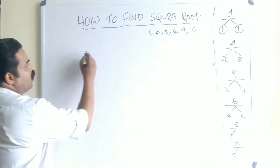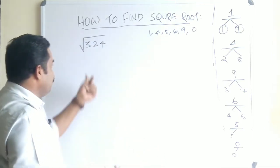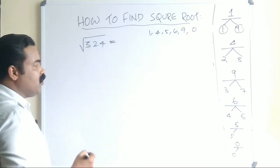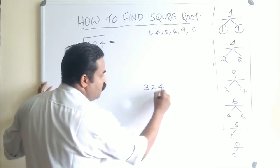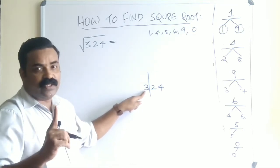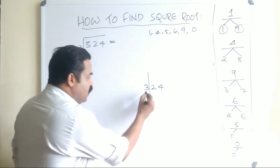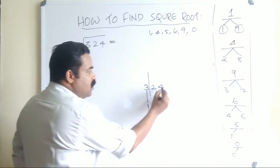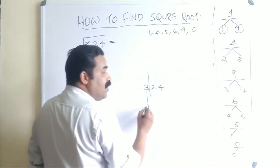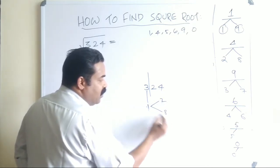Now let's see how to find the square root within seconds. Example: find the square root of 324. From the right, after 2 digits put a line — so we have '3' and '24'. Within 3, the largest perfect square is 1² = 1 (since 2² = 4 is larger than 3), so the first digit of the answer is 1. The last digit is 4, which means the root ends with either 2 or 8. So the answer is either 12 or 18.